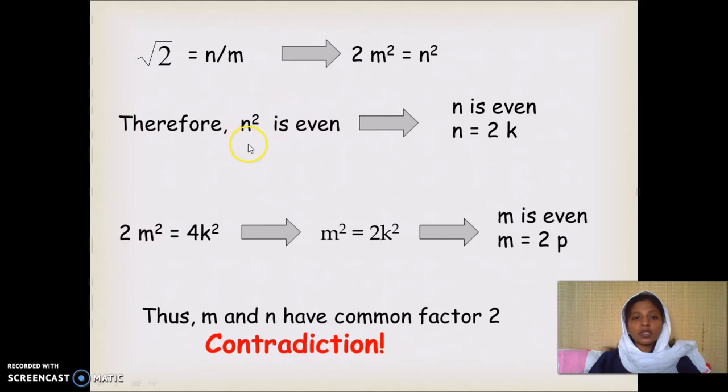Since n squared is even, when you take the square root of n squared, n will be even. So we will write n as some 2k.